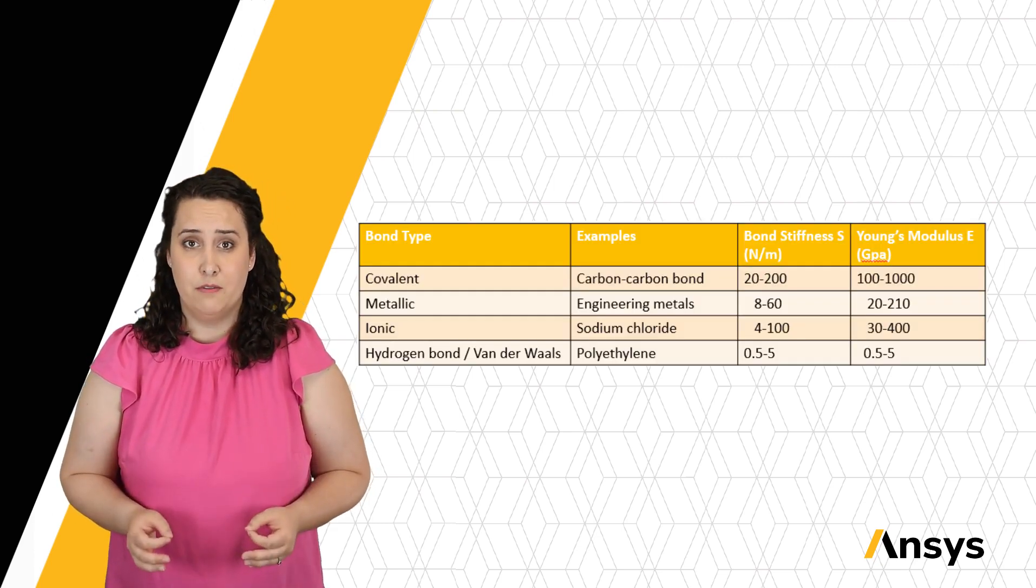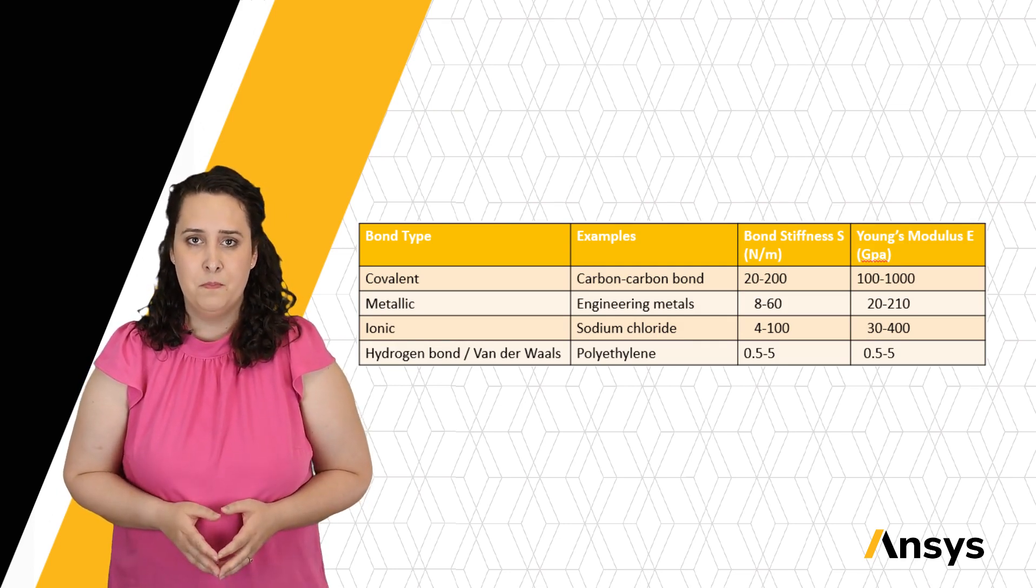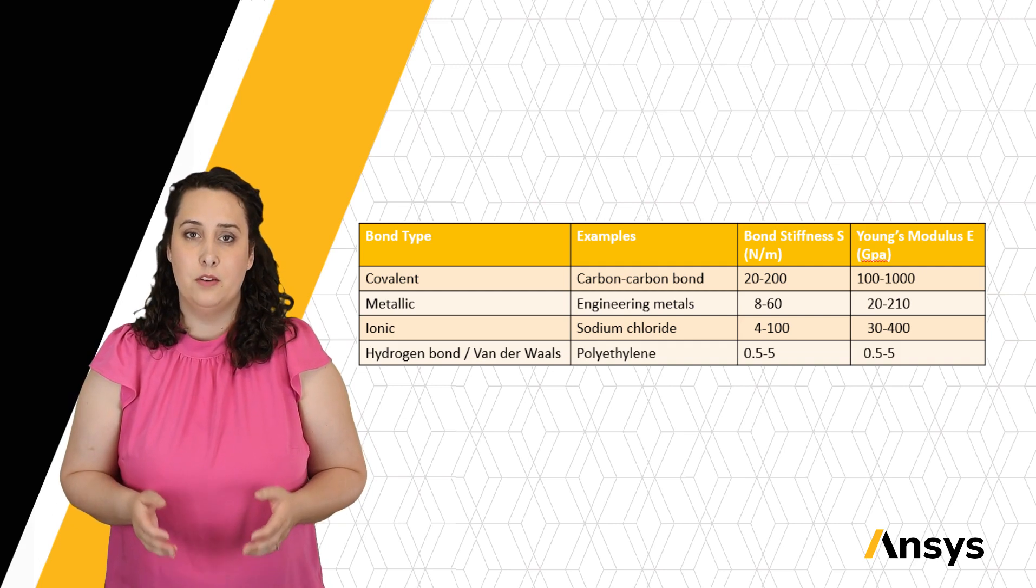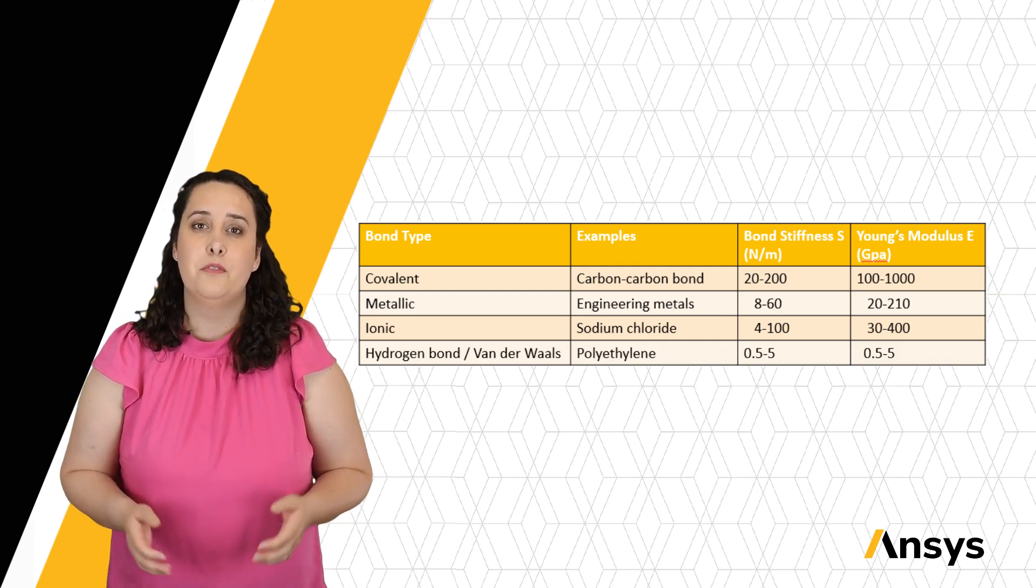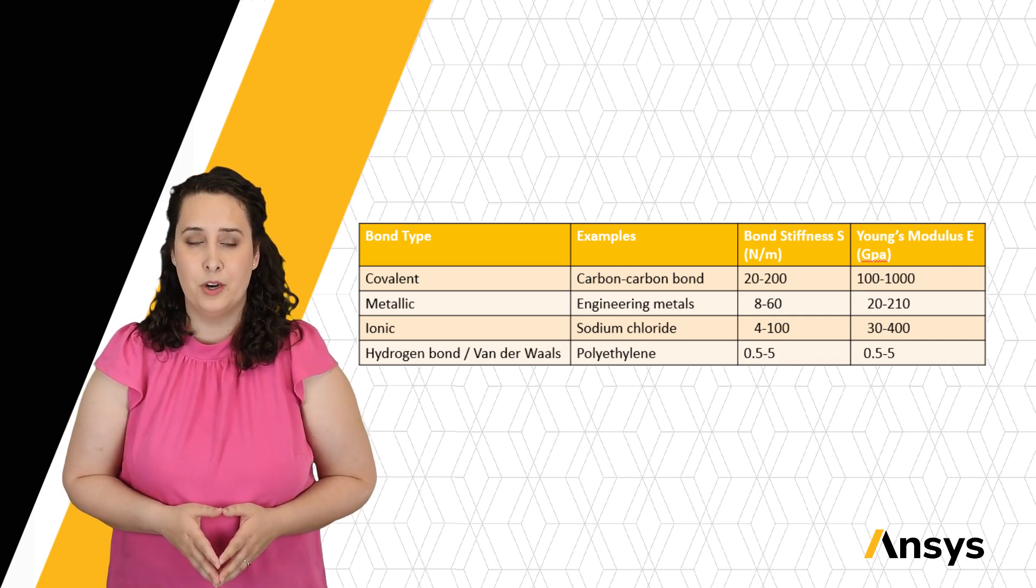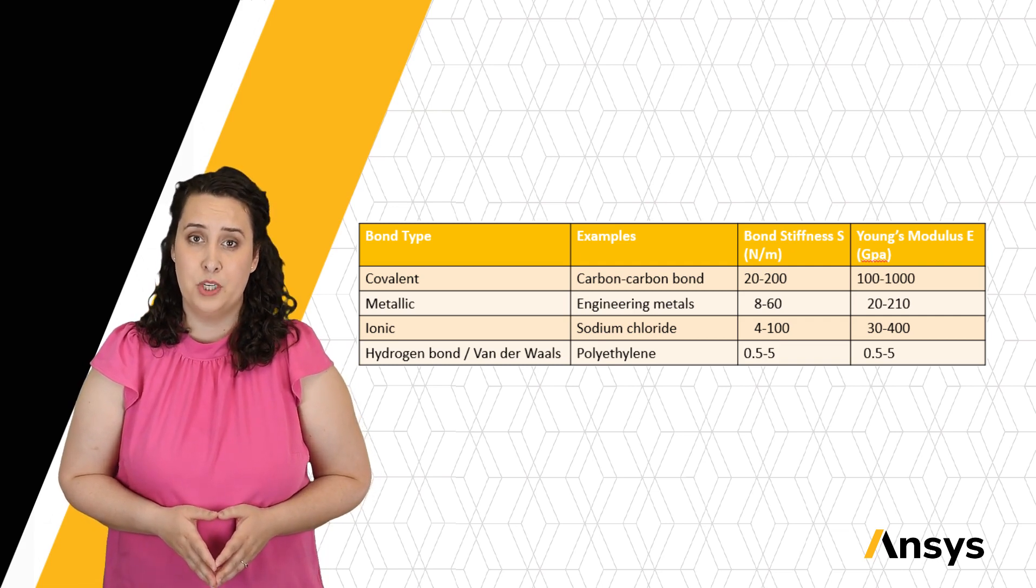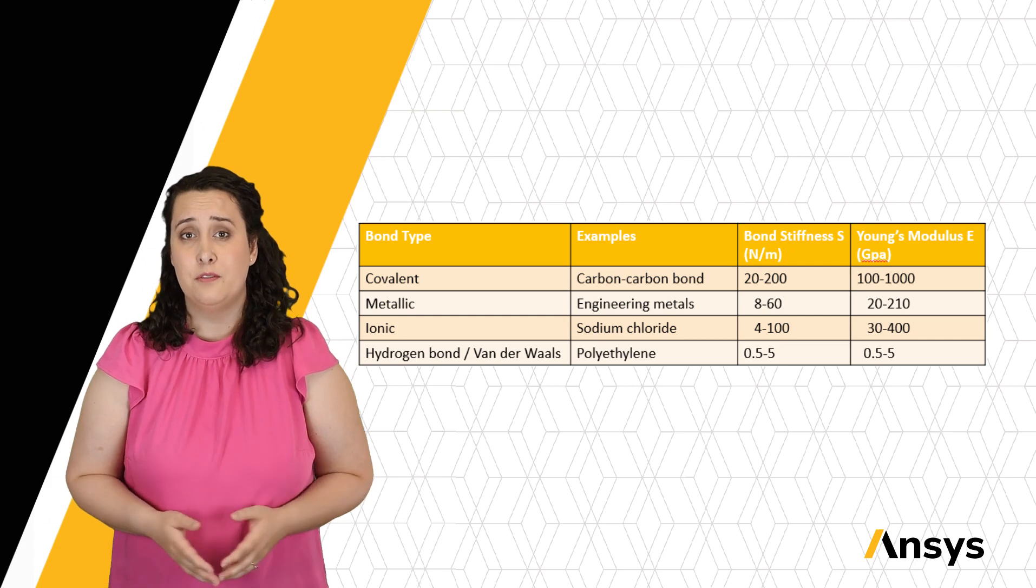Covalent bonds are very, very stiff, 20 to 200 newtons per meter. An example of a covalent bond is a carbon-carbon bond, like those found in diamonds. Van der Waals bonds, on the other hand, are what hold the long covalently bound polymeric chains together within a polymer material. These have a stiffness of 0.5 to 5 newtons per meter.